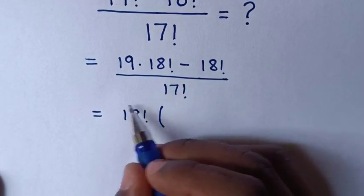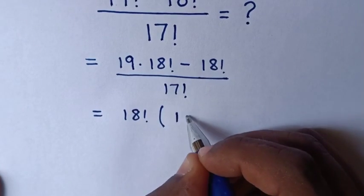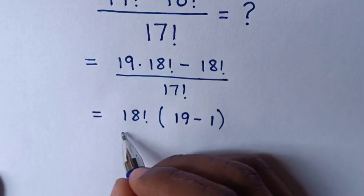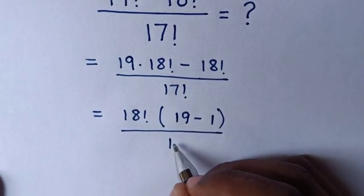Then this divided by this is 19, then minus this divided by this is 1, in brackets over 17 factorial.